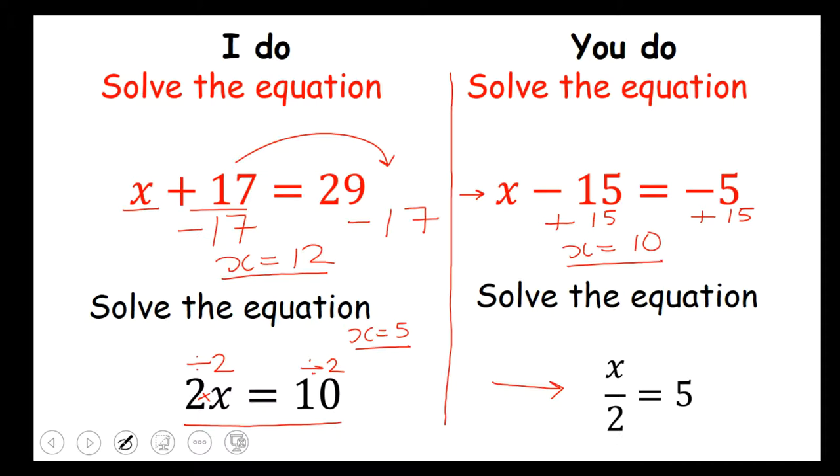This line here it means divided by. So x divided by 2 equals 5. So we have to do the inverse operation. Inverse of divide is times both sides by 2. So now you get x equals 10.